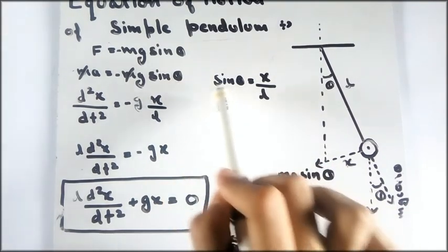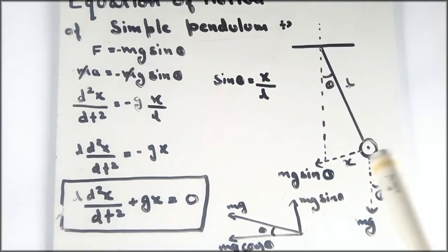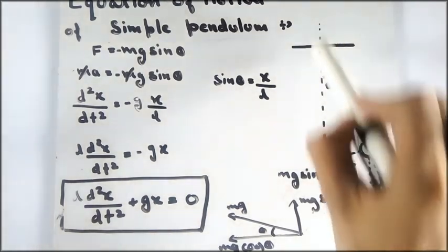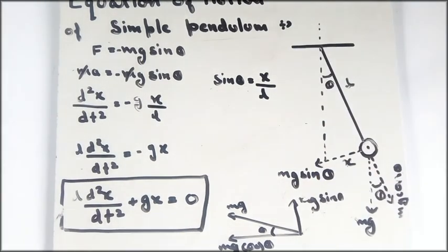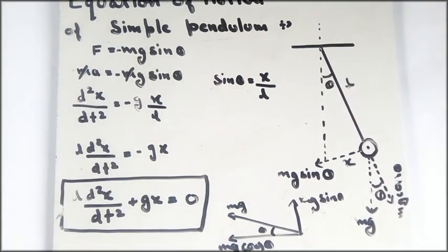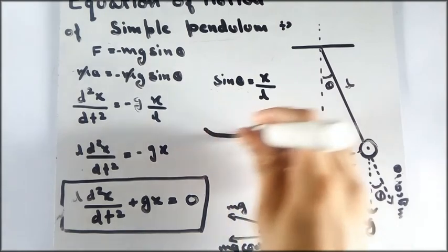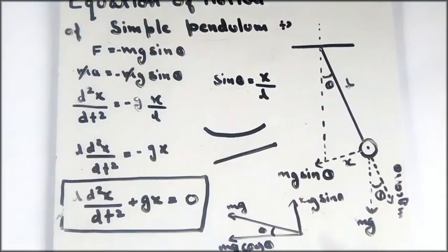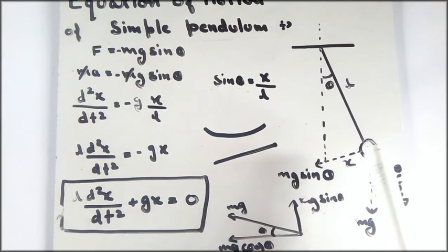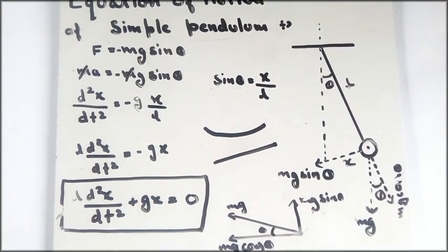We take sinθ as perpendicular upon hypotenuse from this right angle triangle. You might note that when the pendulum oscillates it makes arcs, not straight lines, so the triangle is an approximation. For very small displacement x, we apply the small angle approximation.